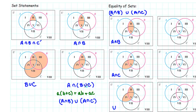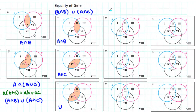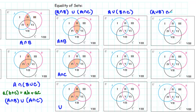So far we've seen that intersection is distributive over union. Our next question might be: is union distributive over intersection? In other words, if we find A union (B intersect C), is that the same as (A union B) intersected with (A union C)?